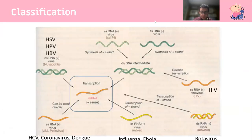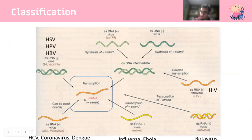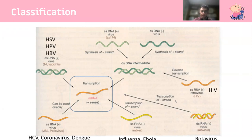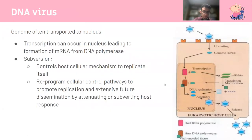A commonly referenced slide classifies viruses based on their DNA or RNA structure, whether they're single or double-stranded, and whether they're negative or positive sense. Positive sense simply means it can be directly transcribed in the nucleus without needing a further conversion step.